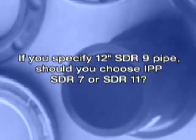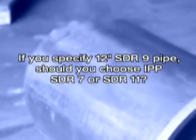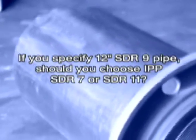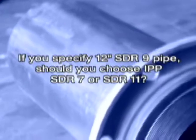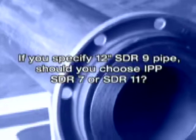For the purposes of illustration, let's say you have specified 12-inch SDR 9 pipe, but IPP can only offer SDR 11 or SDR 7 in this size. You can choose to use the SDR 11 backing ring, however the safety factor will be less than 2.